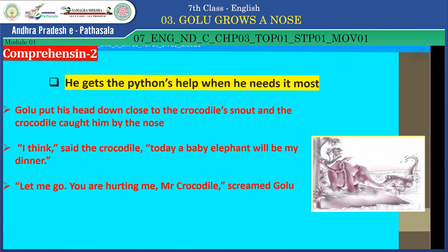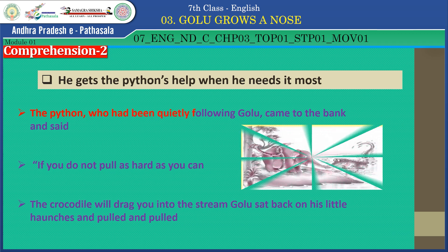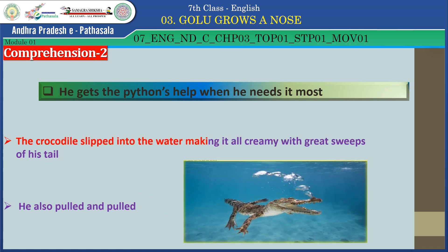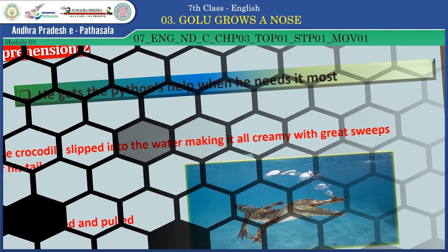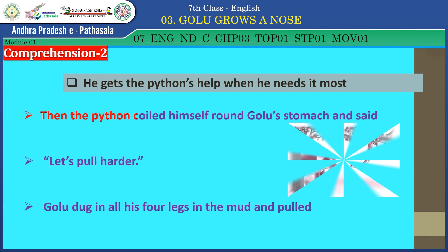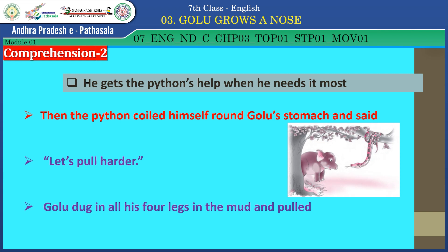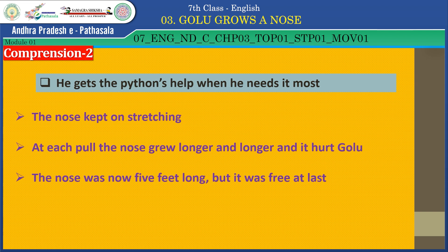The python, who had been quietly following Golu, came to the bank and said, 'If you don't pull as hard as you can, the crocodile will drag you into the stream.' Golu sat back on his little haunches and pulled and pulled. The crocodile slipped into the water, making it all creamy with great sweeps of his tail, and also pulled and pulled. Then the python coiled himself round Golu's stomach and said, 'Pull harder!' Golu dug in all his four legs in the mud and pulled. The nose kept on stretching — at each pull, the nose grew longer and longer, and it hurt Golu. The nose was now five feet long, but it was free at last.